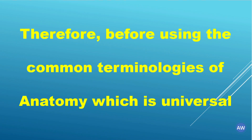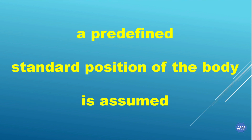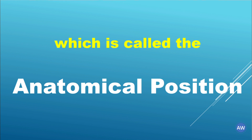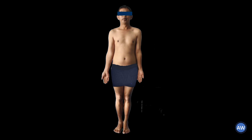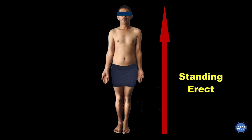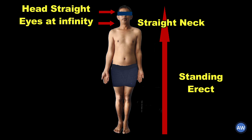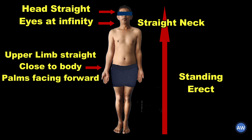Therefore, before using the common terminologies of anatomy, which are universal, a predefined standard position of the body is assumed, which is called the anatomical position. Remember, all the terminologies which you will learn today for describing the topography are used assuming the body to be in this position. The anatomical position is described as a position where a person is standing erect with a straight neck, head facing forwards with eyes looking to the infinity, upper limbs straight and close to the body, and palm facing forwards, lower limbs together.